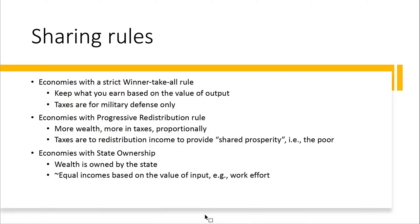The real key here is the idea of sharing rules. In a winner-take-all society like the U.S., you keep what you earn based on the value of output, and taxes are primarily for military defense. In the U.S., our taxes are primarily used for military, Social Security, retirement, Medicare, and Medicaid — so health, retirement, and military make up the largest chunk of our budget.